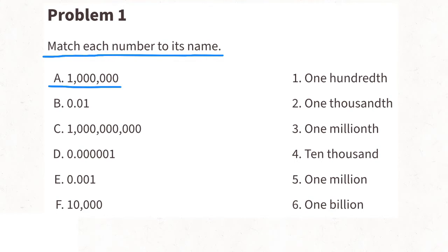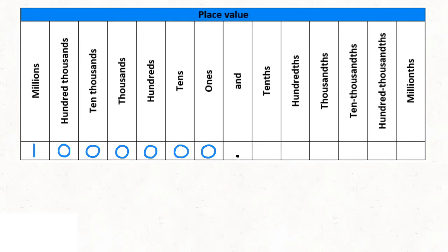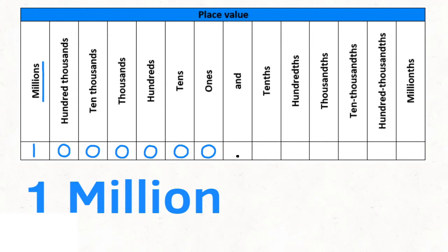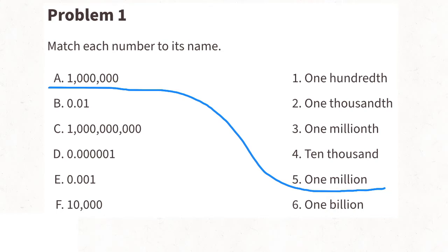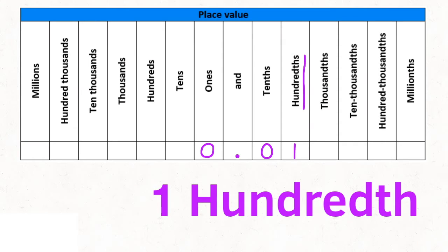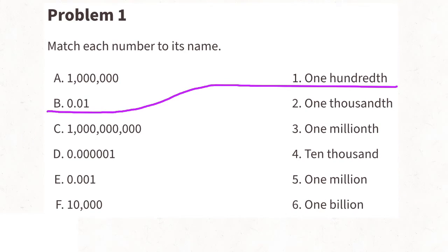A: you have a one followed by six zeros, and after the six zeros is where the decimal point belongs. So in this case, the number is one million. A matches with five, one million. B: 0.01 — that's one zero to the left of the decimal point and one zero to the right followed by a one. That would be one hundredth. B matches with one, one hundredth.